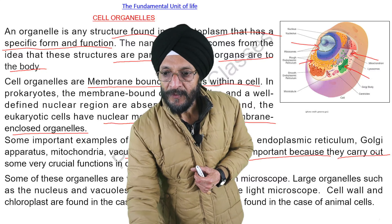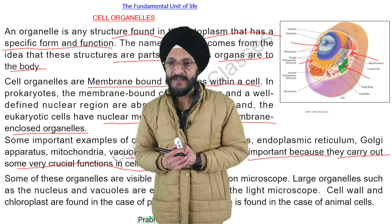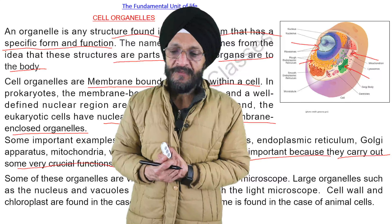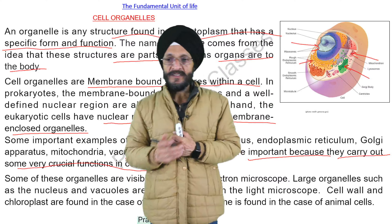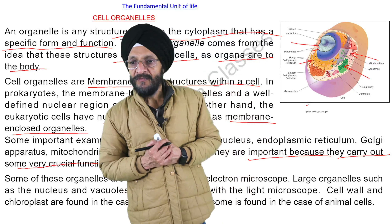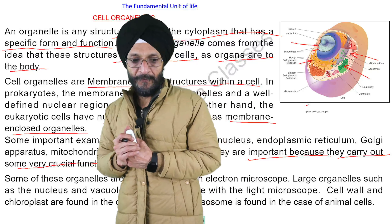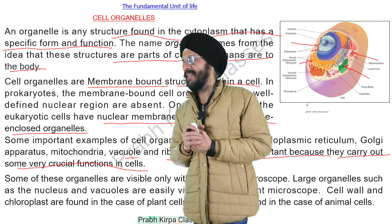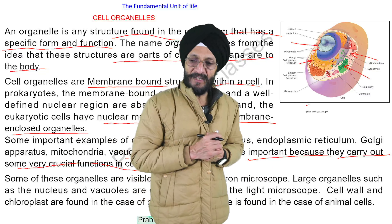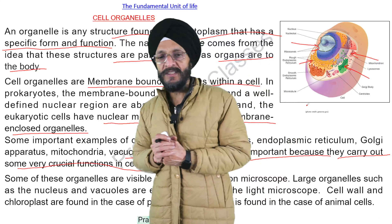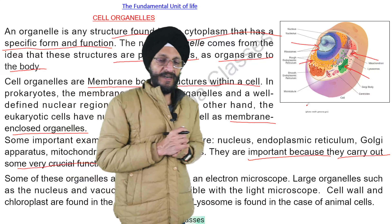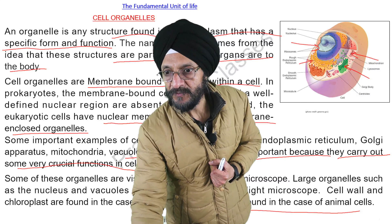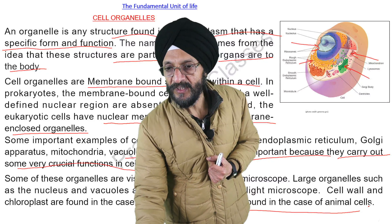Cell organelles are important because they carry out crucial functions in a cell. Some organelles are visible only with an electron microscope, while large organelles such as the nucleus and vacuoles are easily visible with the light microscope. Cell wall is present only in plant cells and not in animal cells. Chloroplasts are also found only in plant cells as they are involved in making chlorophyll. Lysosomes are found in animal cells.